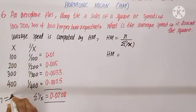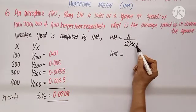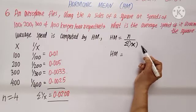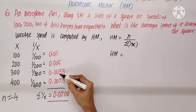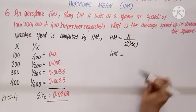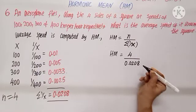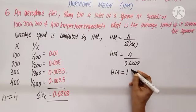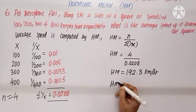We recall the formula for harmonic mean: n divided by sigma(1/x). n equals 4. We compute 1/100 + 1/200 + 1/300 + 1/400. Using a calculator to find each value in decimals and totaling gives sigma(1/x) = 0.0208. Substituting: HM = 4 divided by 0.0208, giving approximately 192.3 km per hour — the average speed.